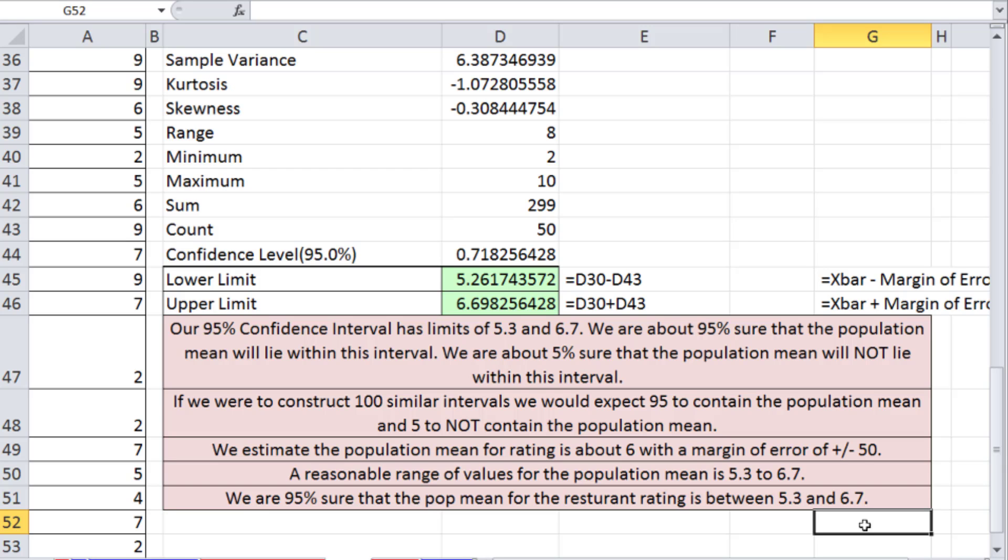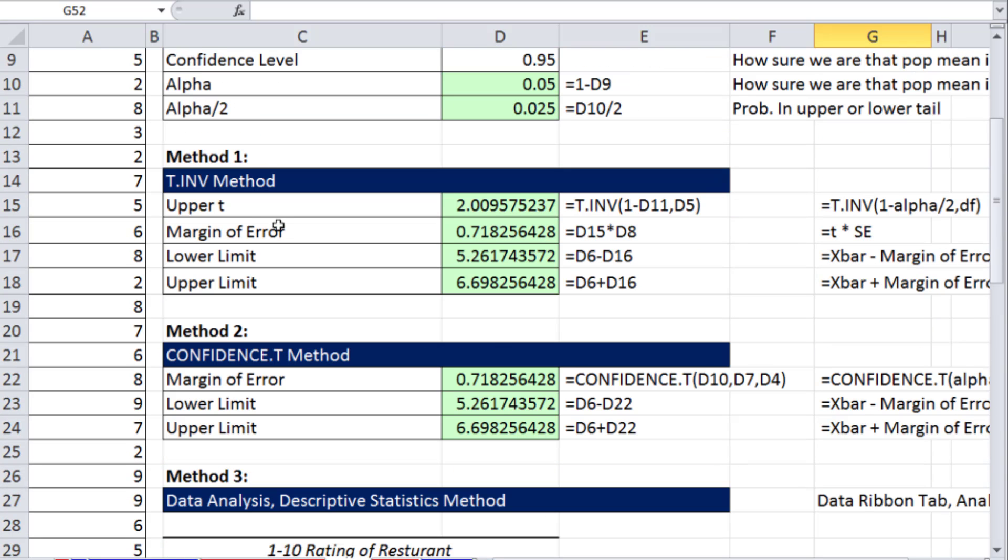All right, in this video, we learned how to create confidence intervals using the t distribution when we don't know population standard deviation sigma. We saw two examples of the t-inverse, the confidence dot t and the data analysis descriptive statistics. All right, in our next video, we'll talk about estimating an interval for proportion, a population proportion. All right, see you next video.